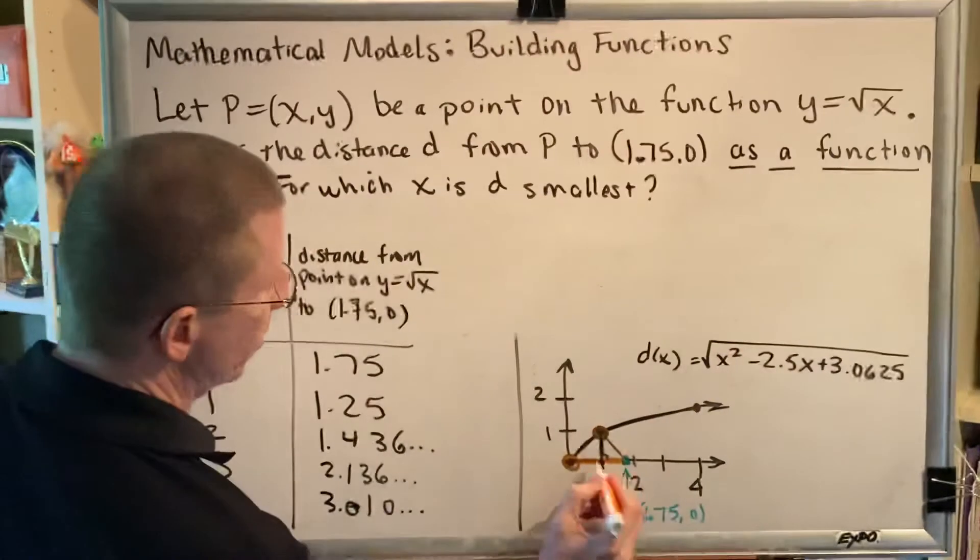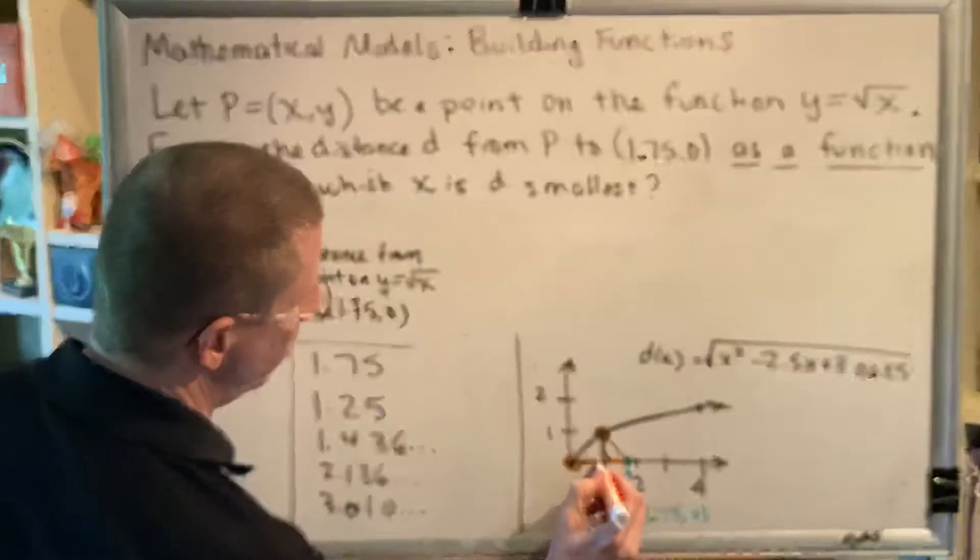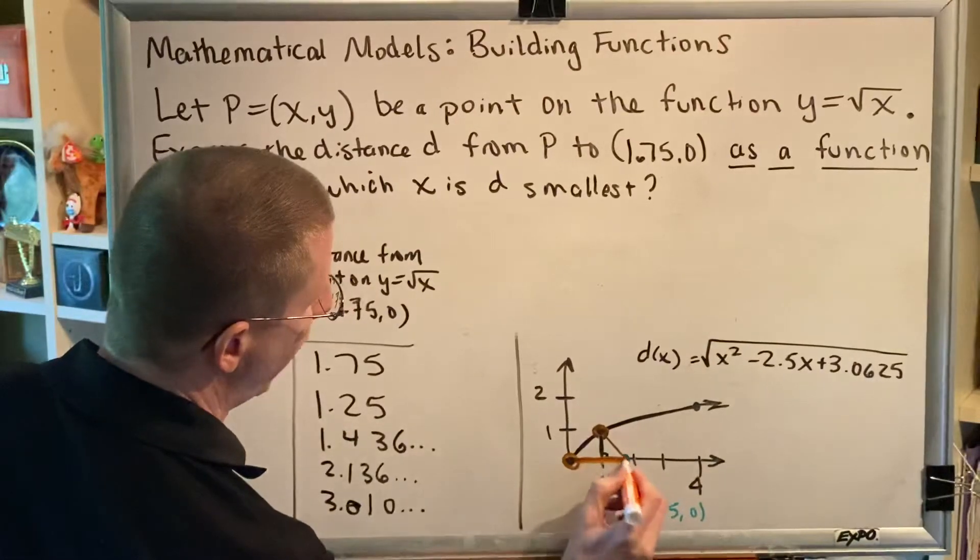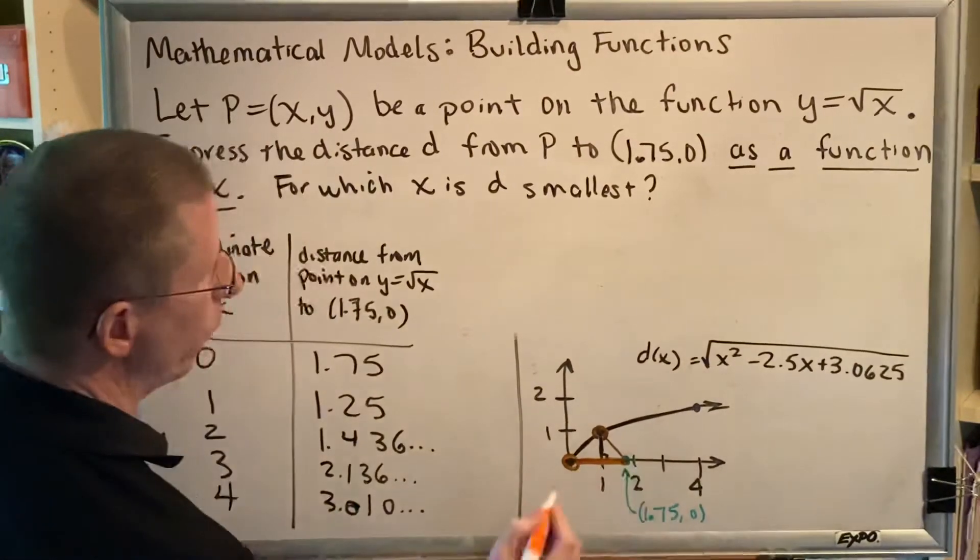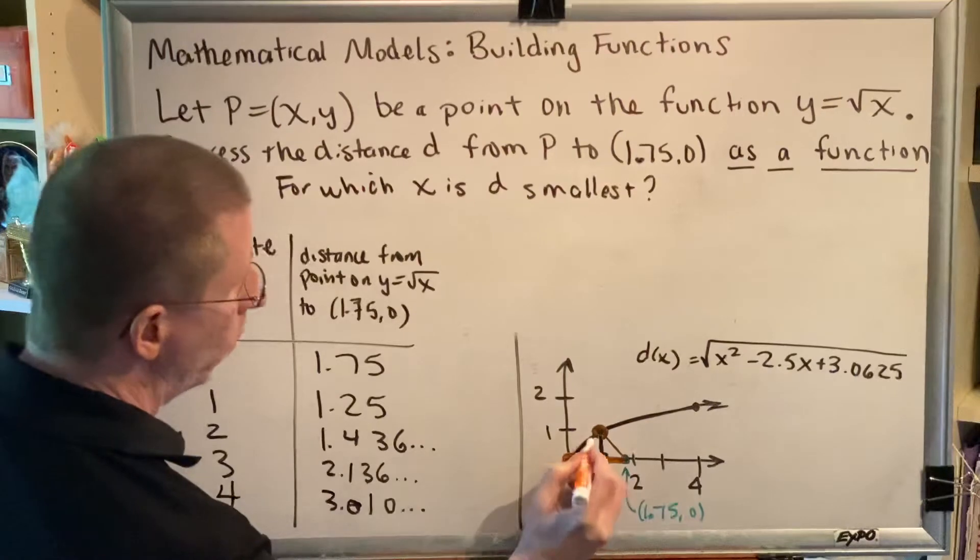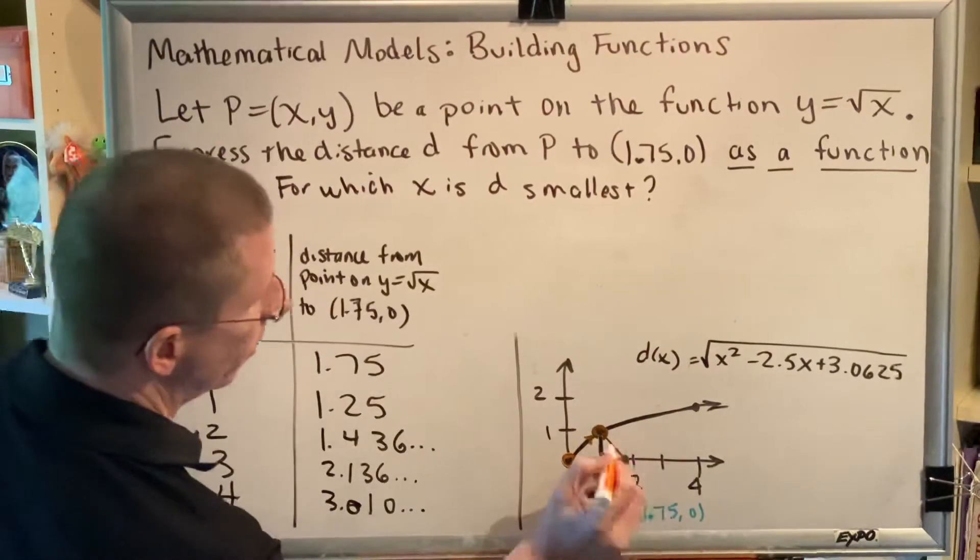The orange distance is what you want to pay attention to. This distance right here that I'm drawing on right now, that's 1.75. But when this point moves to a new location, the distance changes.